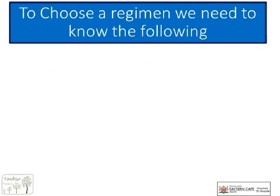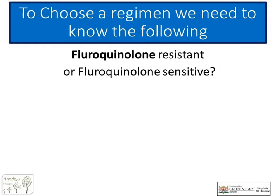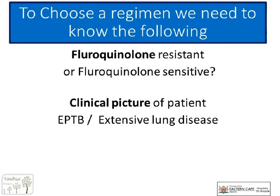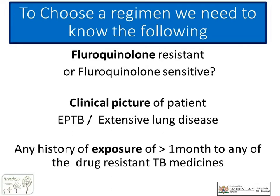To choose the best regimen for your fluoroquinolone-sensitive patient, consider three questions. First, how sure are you that the fluoroquinolone is definitely sensitive? If you have reasons to suspect fluoroquinolone resistance, you would not use one of the MDR-TB regimens. Second, consider the clinical condition of your patient — does the patient have extra-pulmonary TB or extensive lung damage? We can only use the short MDR-TB regimen in relatively well patients. Third, take a good history about any previous exposure to DR-TB second-line drugs — for example, has the patient relapsed or are they being restarted after loss to follow-up? In those patients, we will always use the longer regimen.